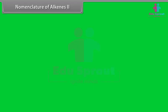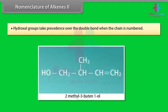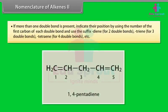Step 7: Hydroxyl groups take precedence over the double bond when the chain is numbered. This compound is named 2-methyl-3-butene-1-ol. Step 8: If more than one double bond is present, indicate their positions by using the number of the first carbon of each double bond and use the suffix 'diene' for two double bonds, 'triene' for three double bonds, 'tetraene' for four double bonds, etc. For example, 1,4-pentadiene.